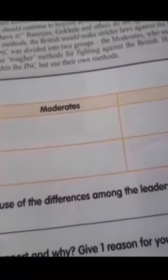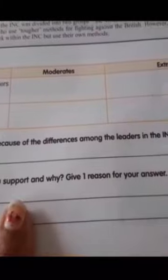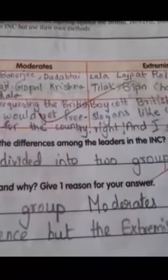Next one — fill in the table: name of the moderate group leaders and extremist group leaders, and method of protest. Everything is given in the passage; you read and write it yourself — I am not going to write it for you. Write the methods they used: what the moderates used and what the extremists used. Next question: what happened because of the difference among the leaders in INC, and which group do you support and why — give one reason. You can write: 'INC was divided into two groups.' Write your own answer for which group you support. Read the paragraph and write it. Okay, thank you, have a nice day.